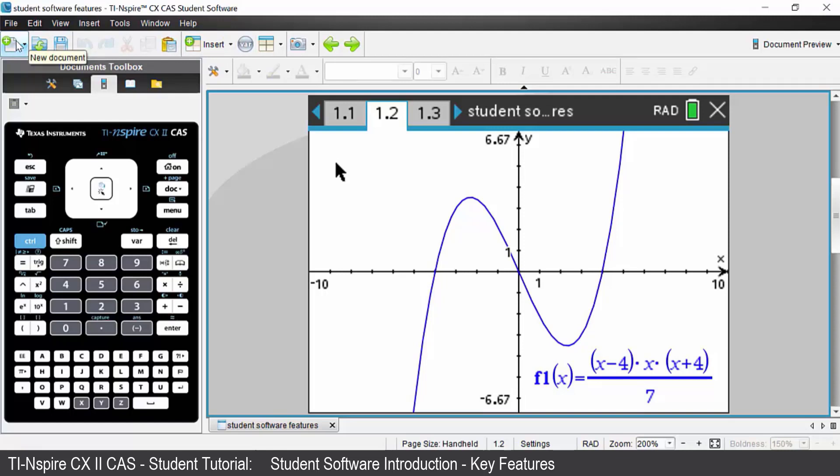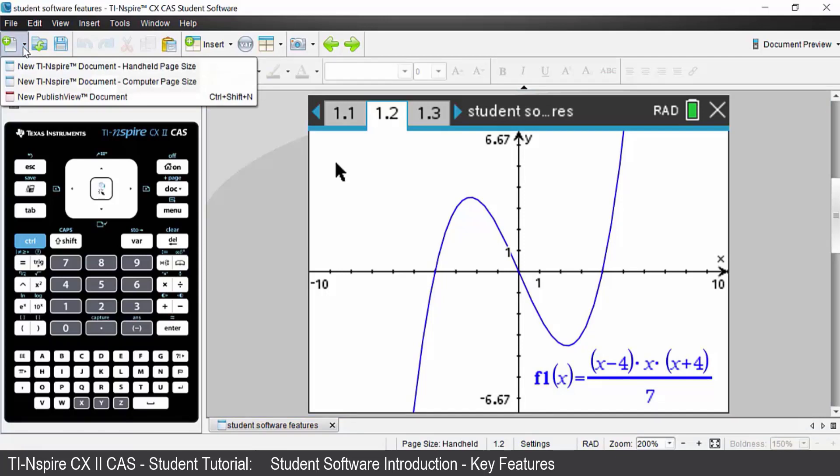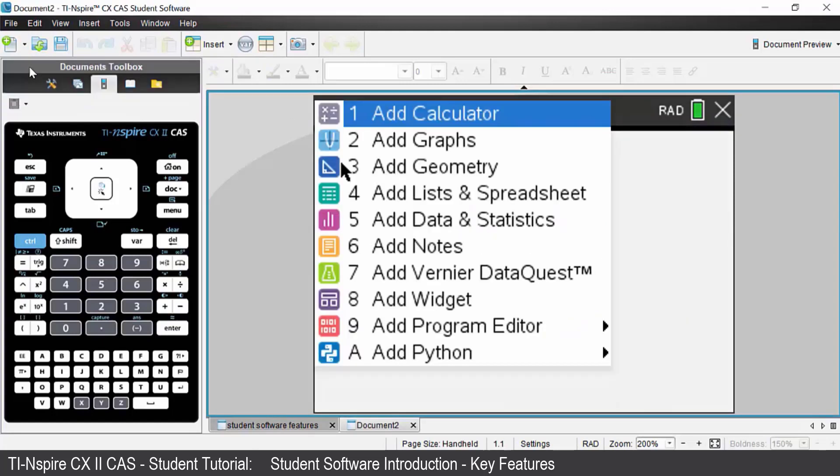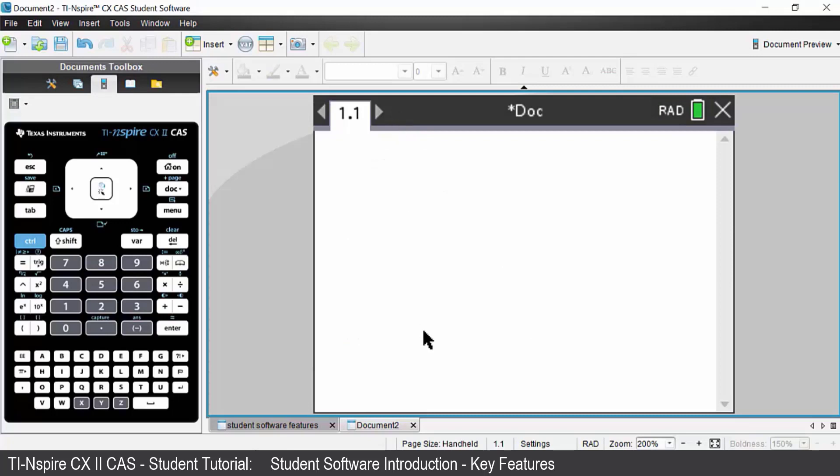The first icon will open new documents for you. So if we click on that we can open a handheld view or a computer view. If I choose the first one I can add in a new document and notice the tab system across the bottom of your screen. I now have document 2 that has just opened up.